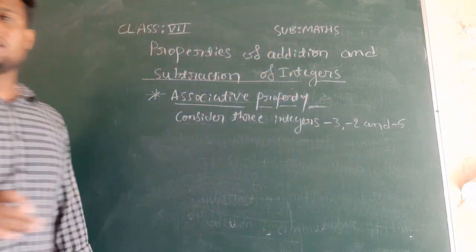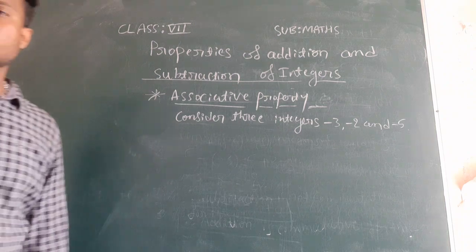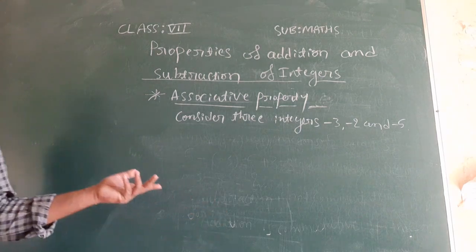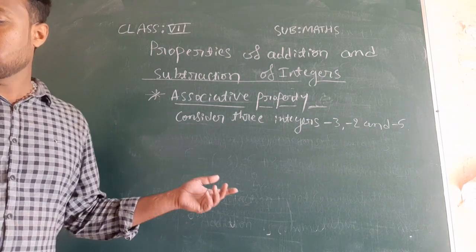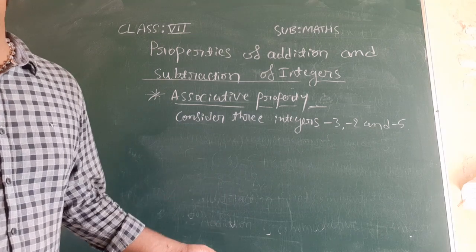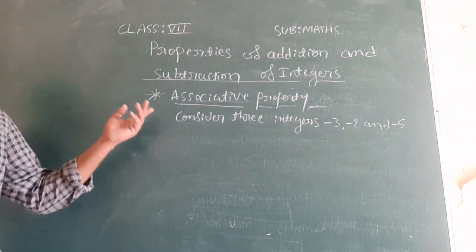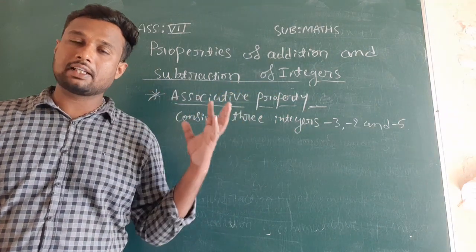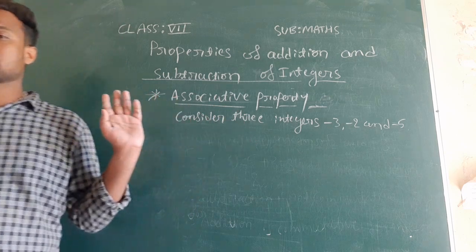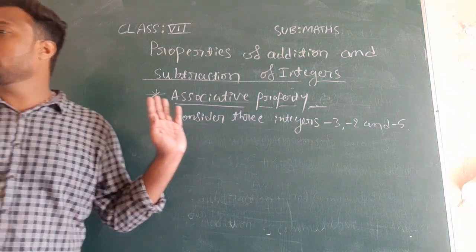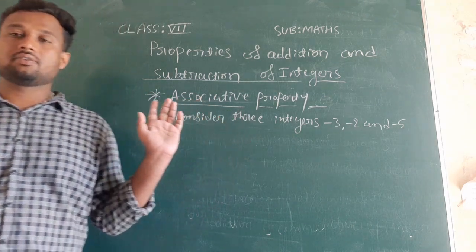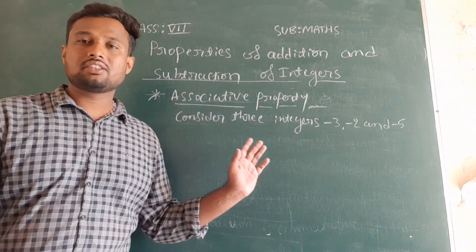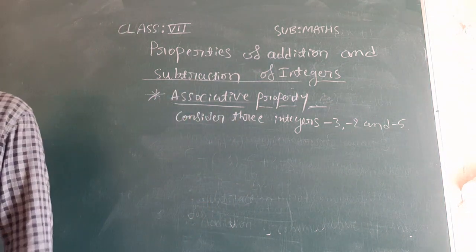We are checking this property with addition only, because for subtraction we are getting different answers in commutative property. So associative property will also give different answers for subtraction. No need to check for subtraction — directly we will check for addition.